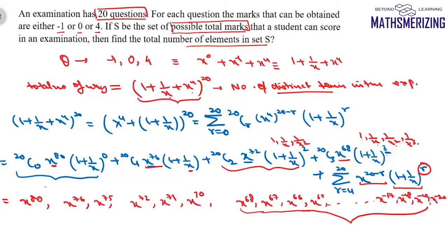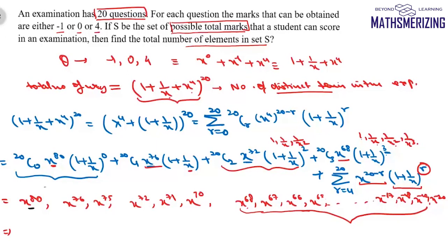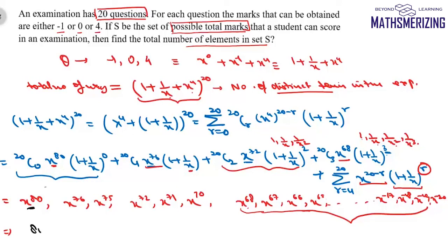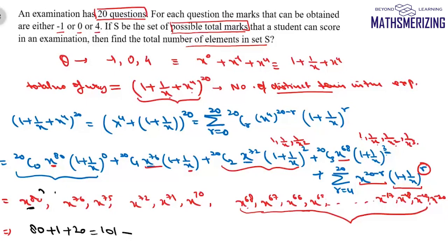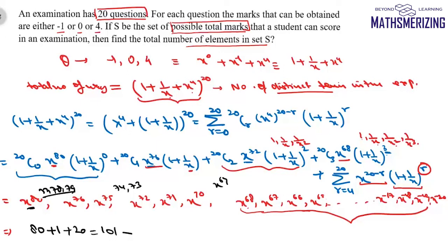So the expansion contains all consecutive powers from x⁻²⁰ to x⁶⁸, plus 6 additional isolated terms: x⁸⁰, x⁷⁶, x⁷⁵, x⁷², x⁷¹, x⁷⁰. Counting from x⁻²⁰ to x⁸⁰ gives 101 terms total, minus the 6 missing powers (77, 78, 79, 73, 74, and 69), giving 101 − 6 = 95. Therefore the total number of elements in set S is 95 — there are 95 different total scores a student can achieve.